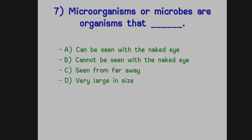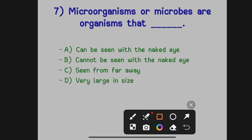The next question: microorganisms or microbes are organisms that dash. Option A: Can be seen with the naked eye. Option B: Cannot be seen with the naked eye. Option C: Seen from far away. Option D: Very large in size. The correct answer is cannot be seen with the naked eye.